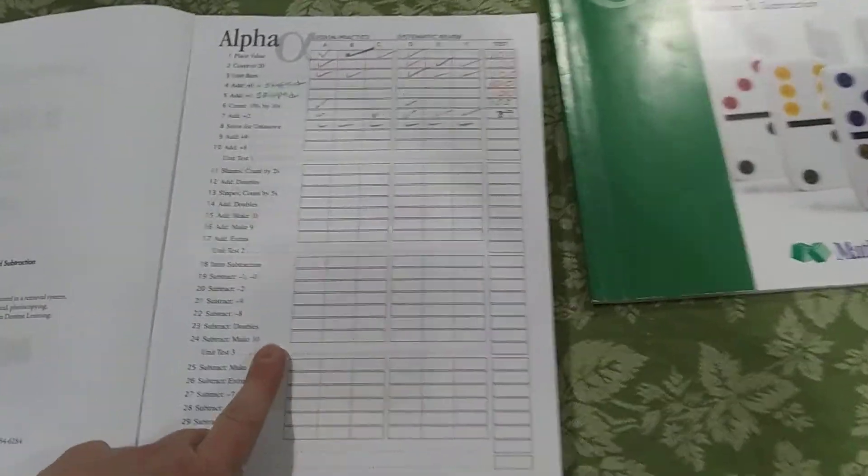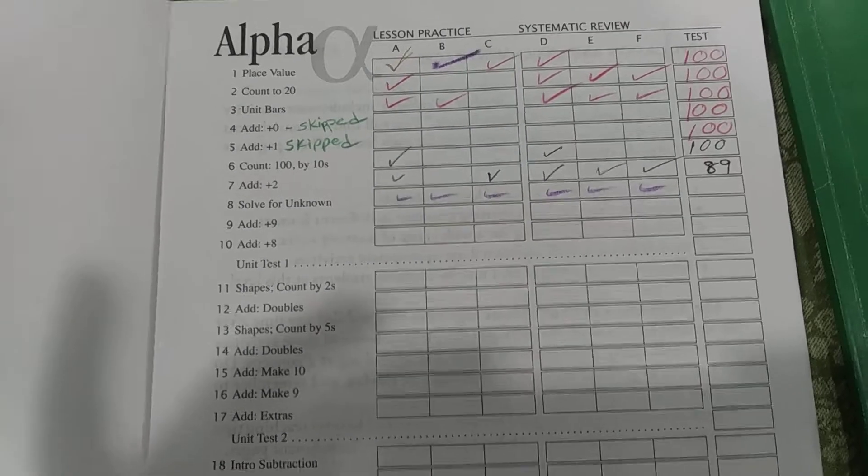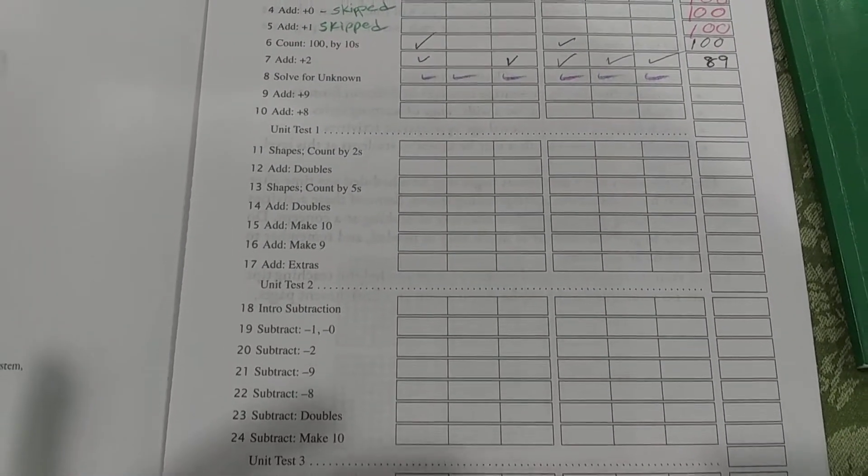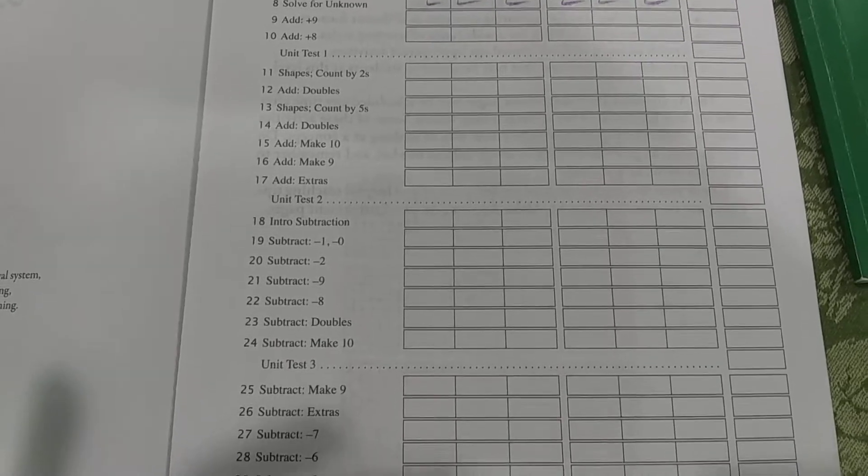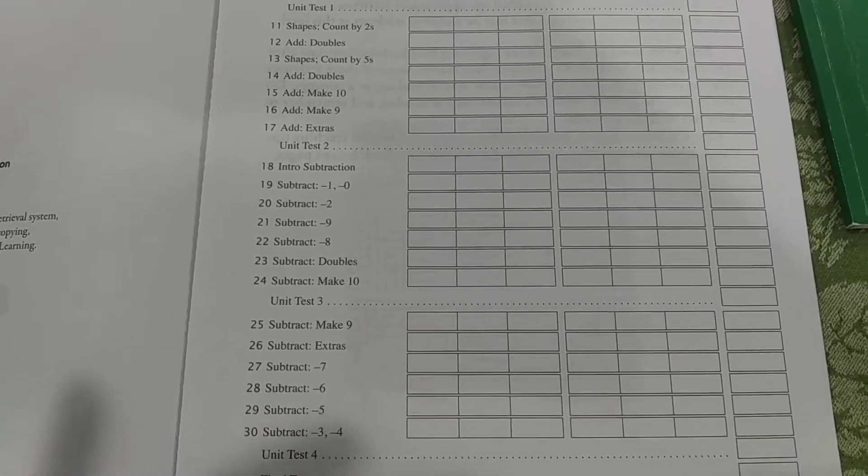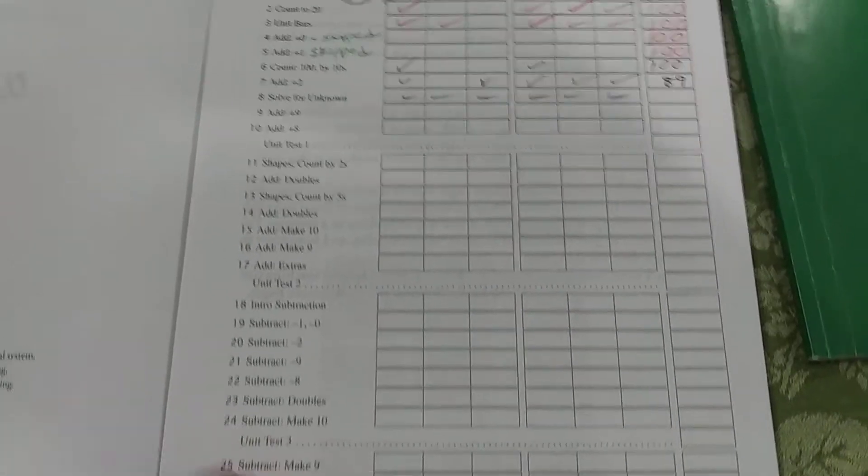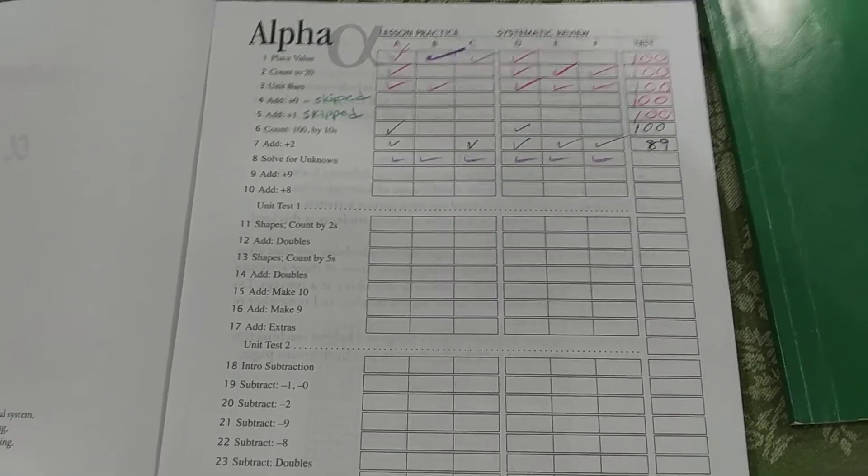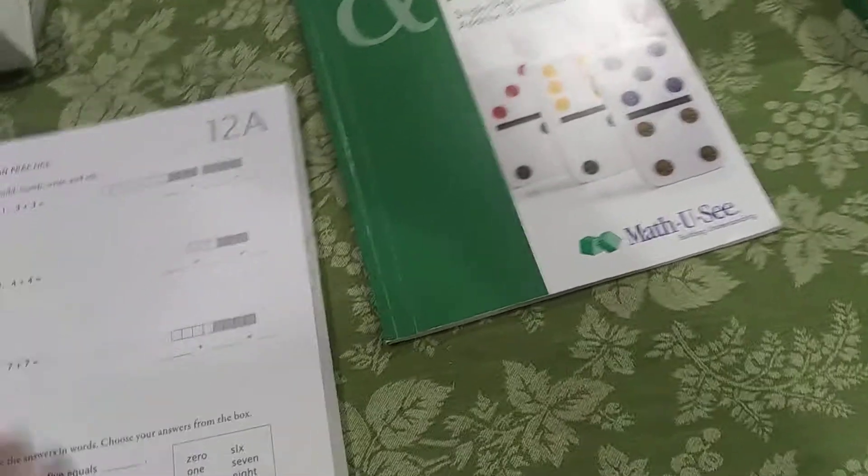There's a checklist in the front of the book. It shows you what they're going to be covering. Counting by twos, fives, making ten and nine, subtraction, solving for the unknown, adding to eight, adding with eights. And I'll show you how.